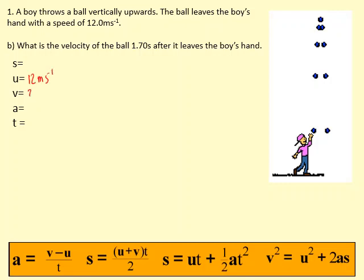Velocity afterwards is what we're interested in after 1.7 seconds. And the acceleration is still minus 9.81 because it's only weight that's acting on it. So it's only acceleration due to gravity. The equation that we need to use is a equals v minus u over t because that's the one without the s in it. Putting the numbers in, and then rearranging.